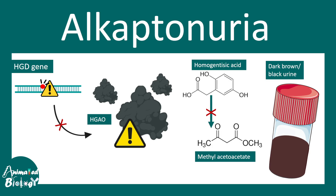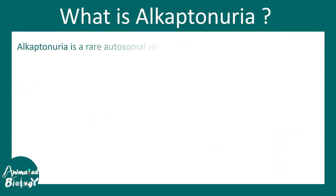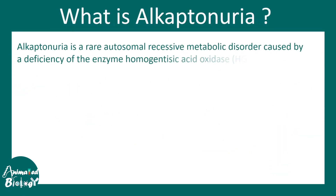In this video we'll talk about alkaptonuria, which is a genetic and metabolic disorder. Alkaptonuria is a rare autosomal recessive metabolic disorder caused by a deficiency in the enzyme homogentisic acid oxidase, or HGA oxidase.